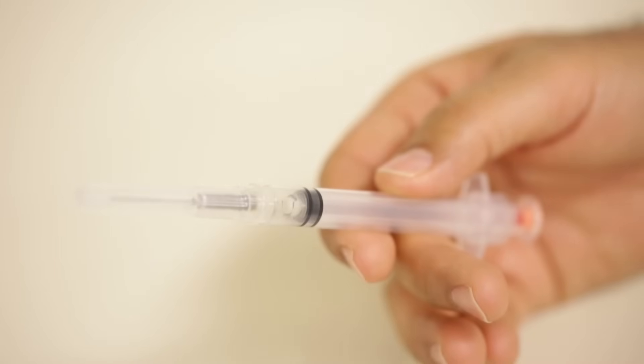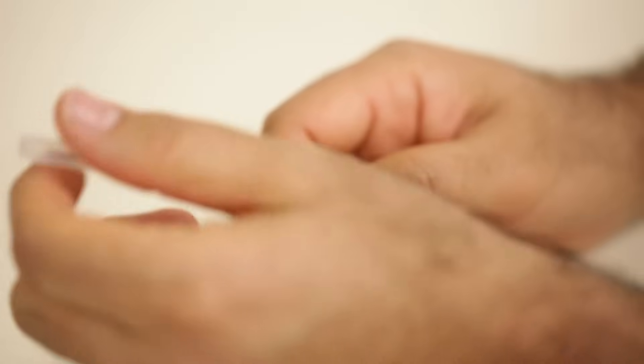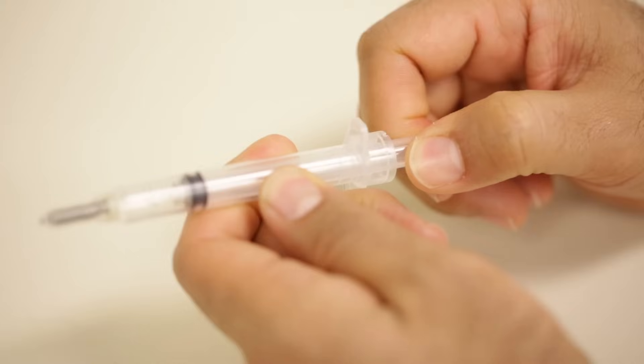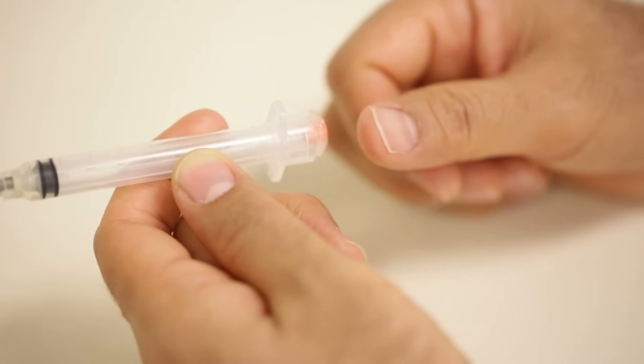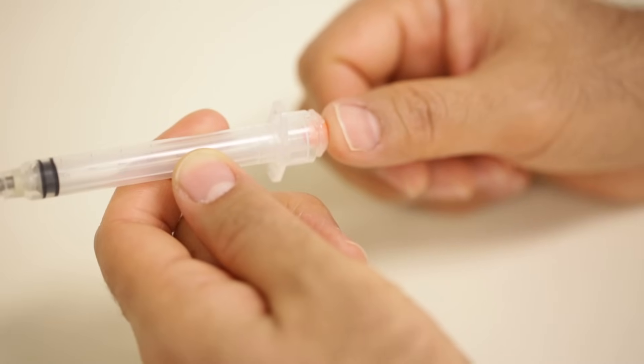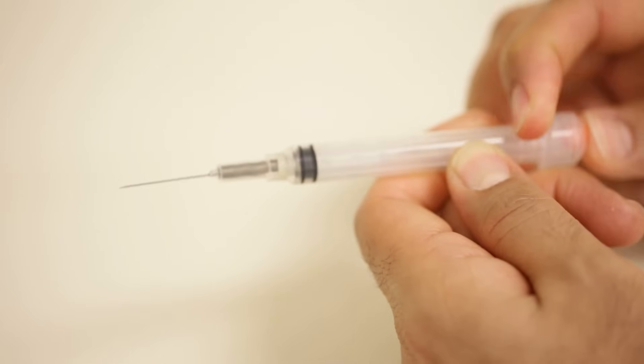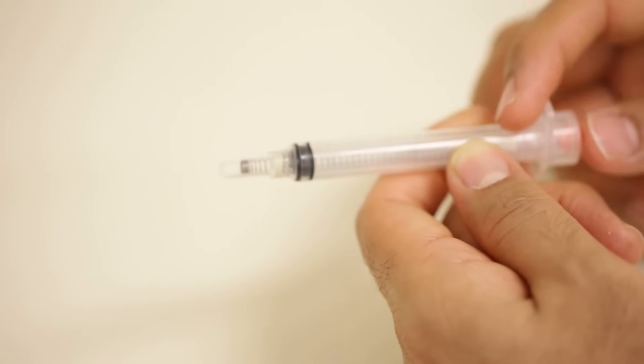This syringe can be used only once and helps prevent sharps injuries. Remove the cap and draw the medicine into the syringe. After the injection, push the small button at the end of the plunger which forces the needle to retract inside the barrel.